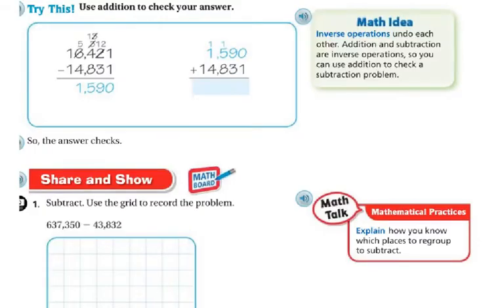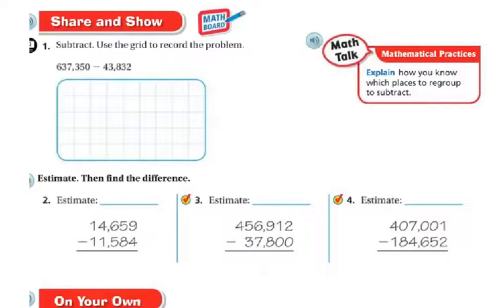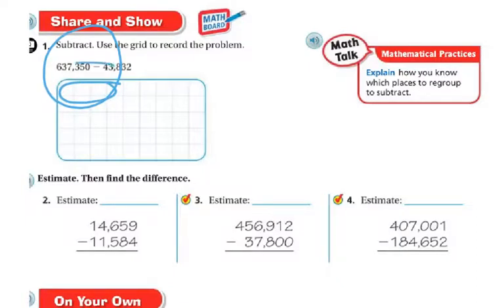One way to know if you got the right answer is to use the inverse operation — the opposite of addition is subtraction. For example, using the problem we just did: if I take the answer and add it to the bottom number, I should get the top number. So 1 plus 0 is 1. 9 plus 3 is 12 — put my 2 here, the 1 in its place, and carry the 1 up there.